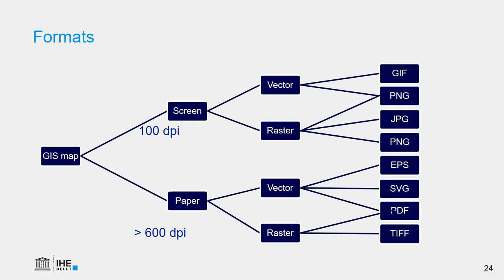For paper, where we have much higher resolution, vector data can be stored in EPS — a format generally used when publishing in scientific journals for high quality print. We can also use SVG, a vector format editable in vector editing programs like Inkscape, which is a nice open source program for further processing your maps. We can also save as PDF. For raster, we can store it in TIFF. The PDF format works well for combinations of raster and vector, as long as a high resolution is chosen.